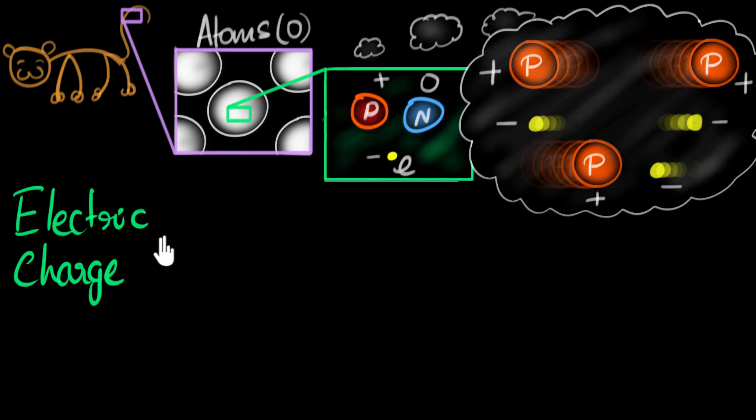So the symbol for electric charge is q. And we measure it in a unit called coulombs, denoted by a capital C.